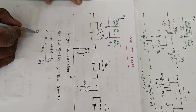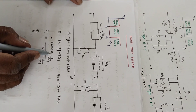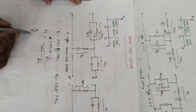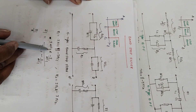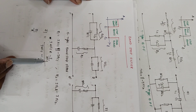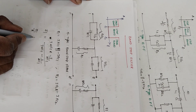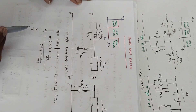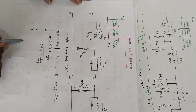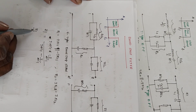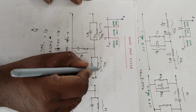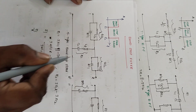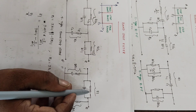If I divide Z1 by 2, then L1 becomes L1/2 and C1 becomes 2C1. As I already explained this concept in the band pass filter video, you can go through that. So for Z1/2 the components are L1/2 and 2C1. For the Z2 branch it is only Z2, so the components are L2 and C2.